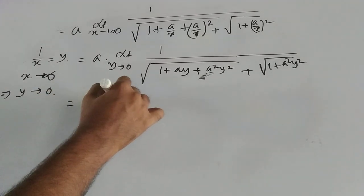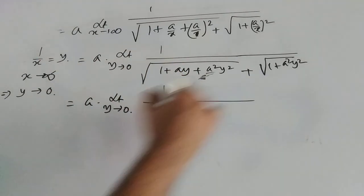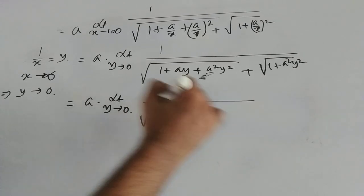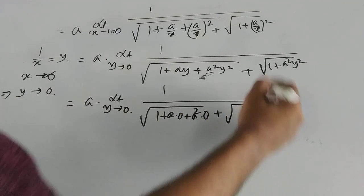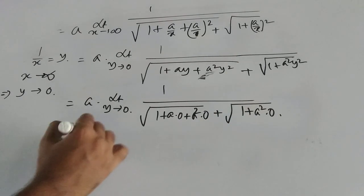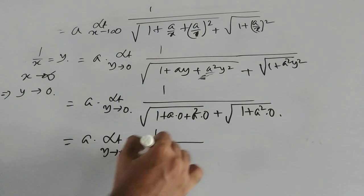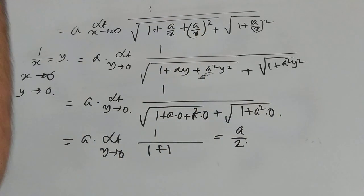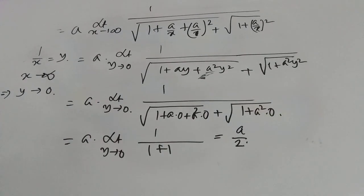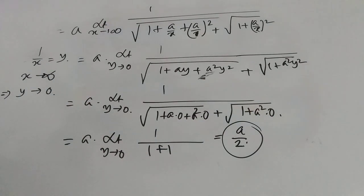That means a times limit y tends to 0 — if I now put the value of y as 0, it becomes 1 divided by square root of (1 + a·0 + a²·0) plus square root of (1 + a²·0), which equals 1 divided by √1 + √1 = 1 divided by 1 + 1. So the final answer is a/2. If you like this video, please give your comments, watch, and subscribe to my channel. Thank you.